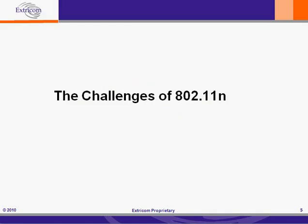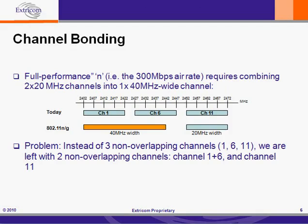Now let's talk about the challenges of 802.11n. One of the main issues in getting the most out of 802.11n is channel bonding, and it's also one of the main challenges. While channel bonding brings tremendous performance benefits, it also brings implementation challenges. Full performance N — the 300 Mbps error rate — requires combining two 20 MHz channels into one 40 MHz wide channel. That's what channel bonding is.